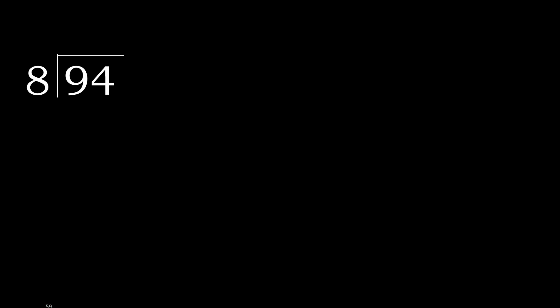Ninety divided by eight. Nine is not less, therefore work with nine. Eight multiplied by which number is nearest to nine but not greater? Eight multiplied by two is sixteen — sixteen is greater. Eight multiplied by one is eight — not greater. Okay. Nine minus eight is one.